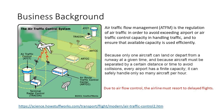Air traffic flow management, or ATFM, is the regulation of air traffic put in place to avoid exceeding airport or air traffic control capacity in handling traffic, and to ensure the available capacity is used efficiently. Because only one aircraft can land or depart from a runway at a given time, and because aircraft must be separated by a certain distance or time to avoid collisions, every airport has a finite sector capacity. It can safely handle only so many aircraft per hour.